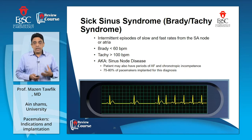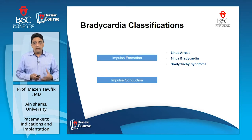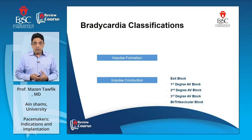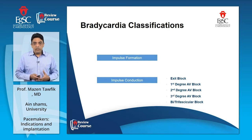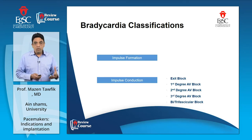Sick sinus syndrome constitutes around two-thirds of pacemaker indications. The second category is abnormality of impulse conduction — the famous indication of cardiac pacemakers — including exit block at the level of the sinoatrial junction, atrioventricular block of all degrees (first, second, third), and fascicular block at the level of the His bundle fascicles or bundle branches: left bundle branch, right bundle branch, and the two divisions of the left bundle branch — anterior and posterior fascicle.